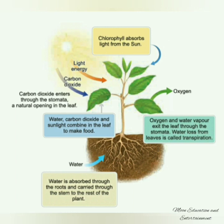Plants absorb air through different sources. Water is absorbed through the roots and carried through the stem to the rest of the plant. Carbon dioxide and light are obtained from air and the sun. Oxygen and water vapor exit the leaf through the stomata, and the water loss from leaves is called transpiration. Carbon dioxide enters through the stomata, which are natural openings in the leaf. The chlorophyll in leaves absorbs sunlight and uses it in the process of photosynthesis. This is how oxygen and carbon dioxide travel through the respiration and photosynthesis processes.